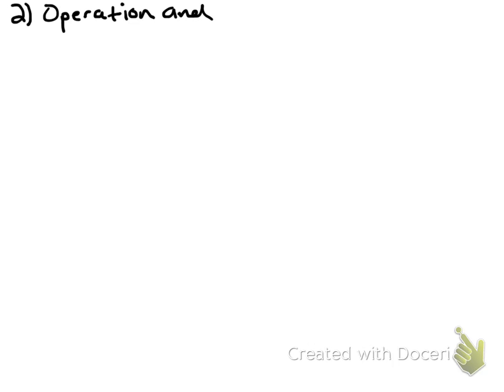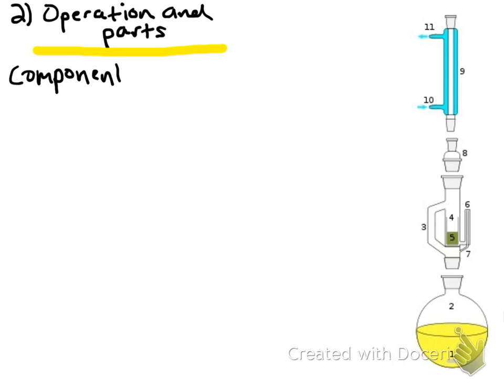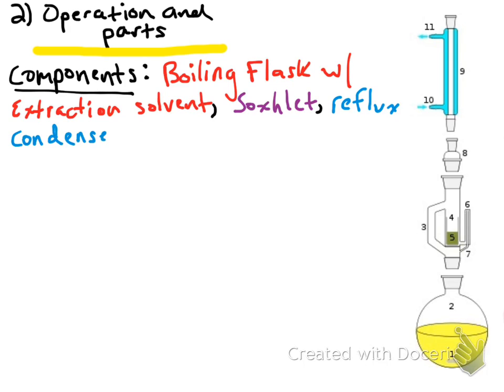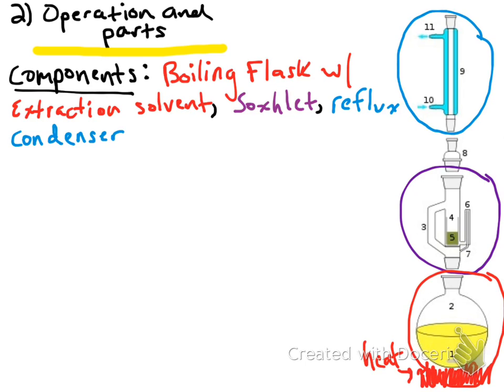Now let's take a look at the parts and operation of the Soxhlet. The three major components of a Soxhlet apparatus are: a boiling flask containing the extraction solvent, the Soxhlet body in the middle, and a reflux condenser on top. The boiling flask is filled with the solvent of interest, heat is applied, the solvent evaporates up into the reflux condenser, and then condenses back down into the Soxhlet where the sample is.